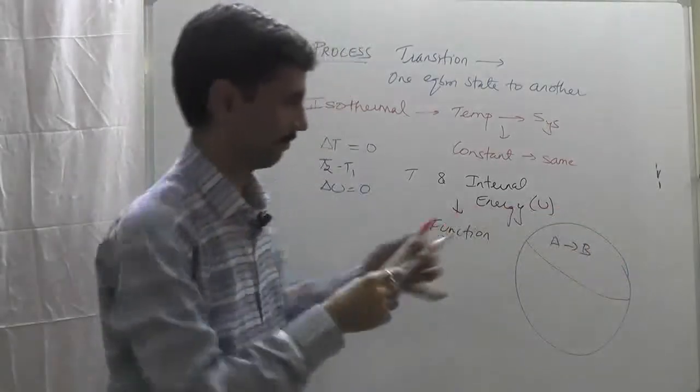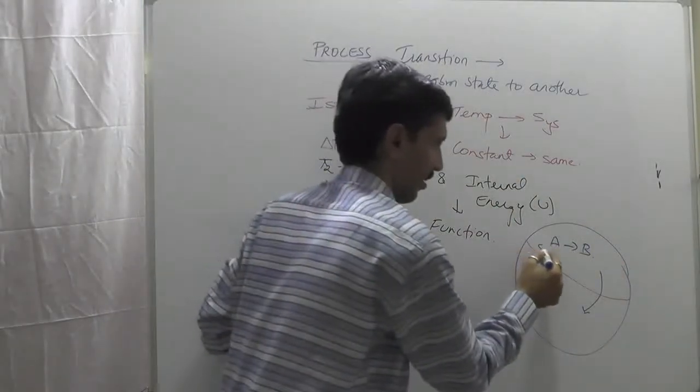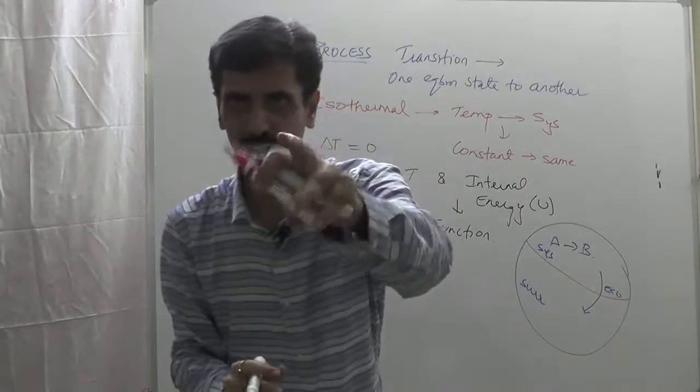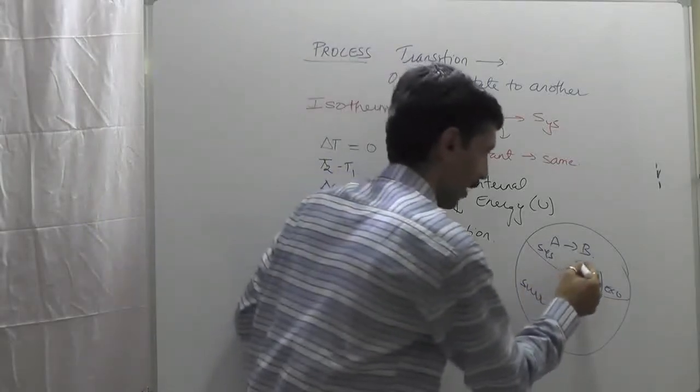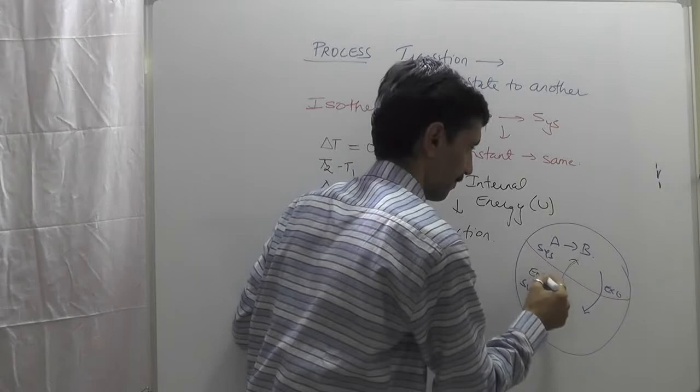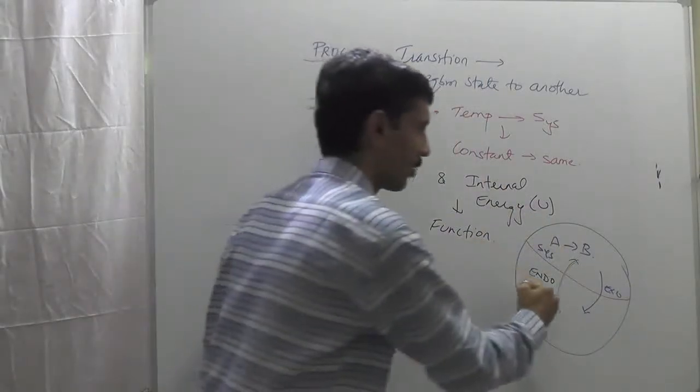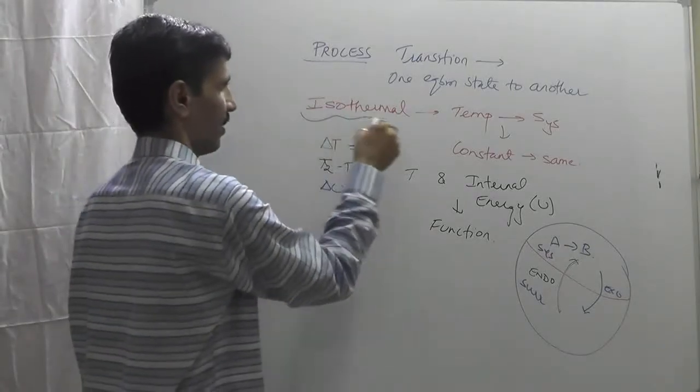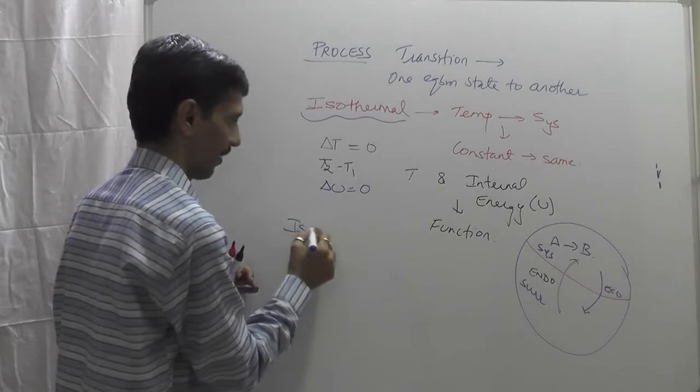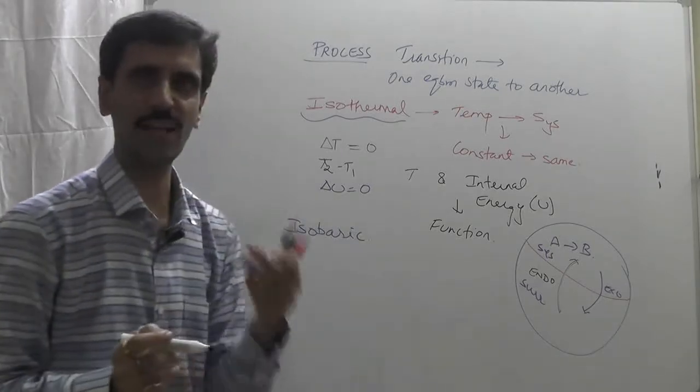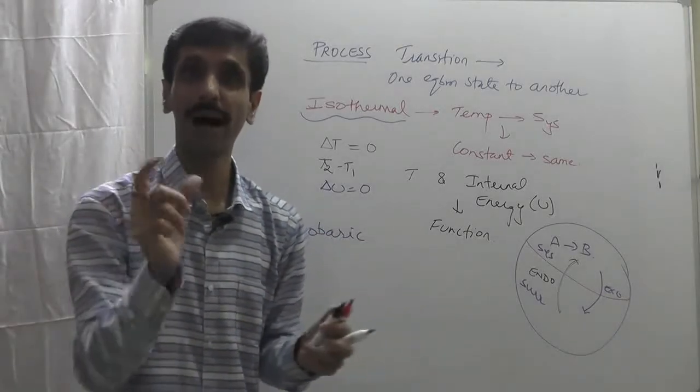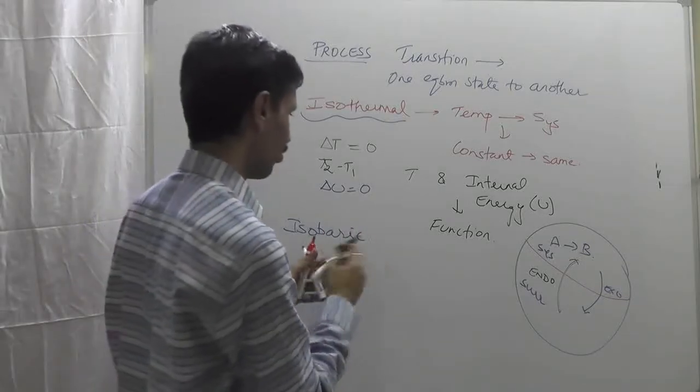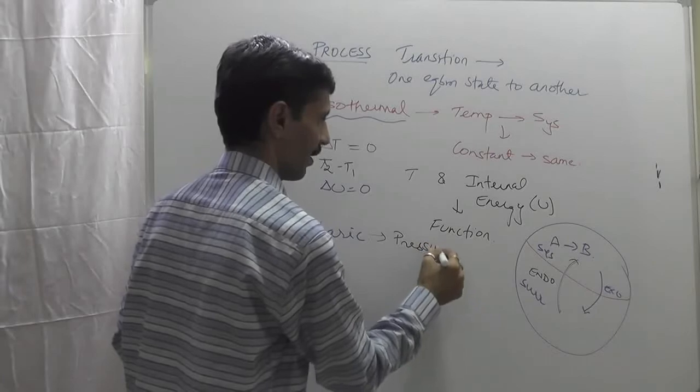So this is system, surrounding, this is exothermic process. Now endothermic you must have understood. Next is isobaric process. Once again I stress: try to understand the meaning behind this word. Iso means same, bar is a unit of pressure. So the pressure of the system remains constant.